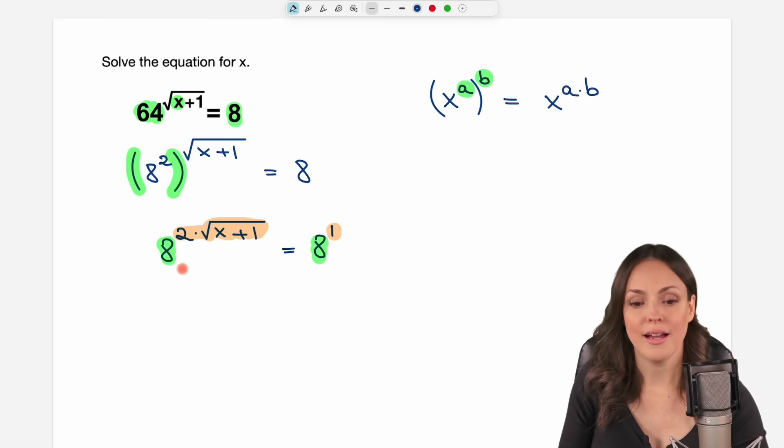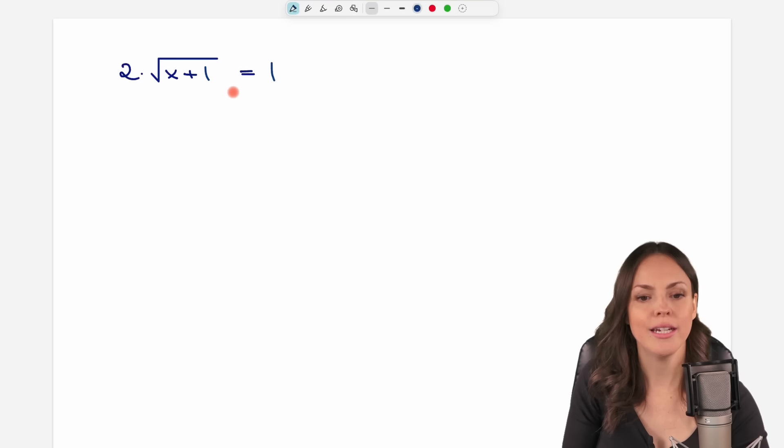If both sides have to be equal, and we have 8 to the power of something here and 8 to the power of something here, then these orange parts have to be equal to each other. Instead of writing this equation like this, we know that my 2 times the square root of x plus 1 has to be equal to this orange thing here, to the 1. Now I can just solve this equation.